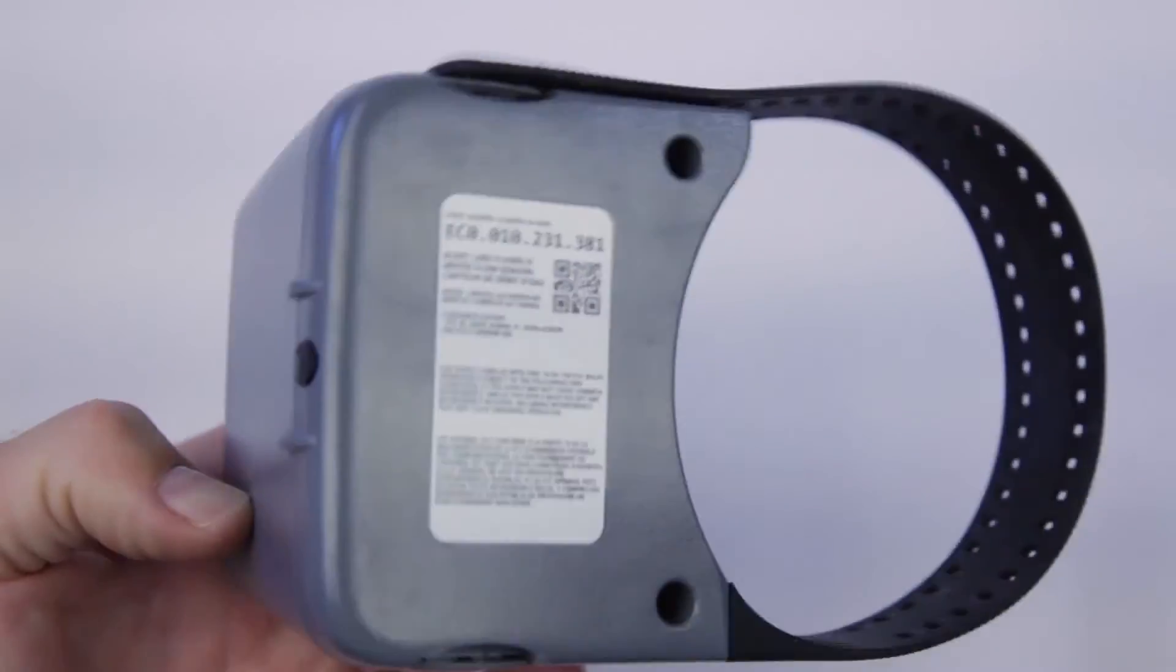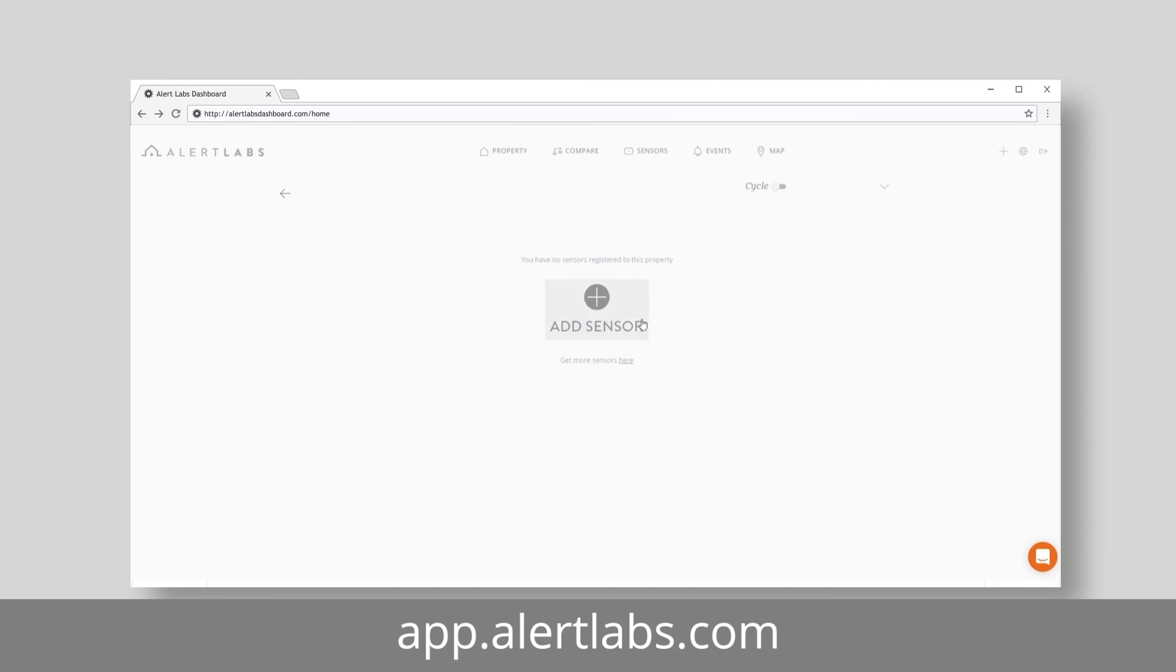Register Floweo's serial number by using the app or going to app.alertlabs.com.